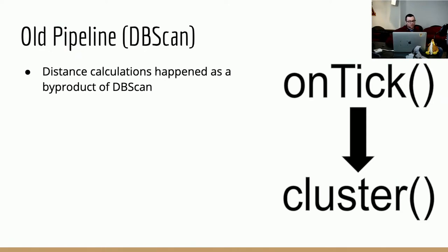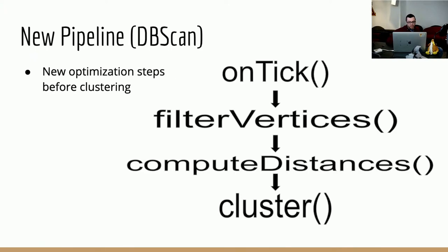Here's a look at the order of operations in the current DBSCAN engine implementation. Every time a correlation tick occurs, the entire graph topology is passed to the clustering process and all vertices with faults are compared to see if they should be clustered, with distances computed for all those vertices at that point. In the new pipeline, when a tick occurs we take the current state of the graph, create a filtered copy with all dead vertices dropped, then pre-compute all distances in parallel and cache the results. The clustering process then takes the filtered graph, and any distances it asks for are already in memory for fast lookup.